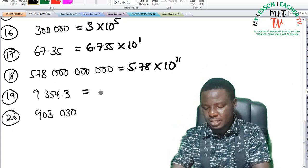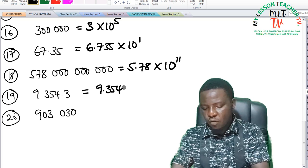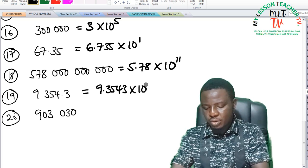And for number 19, this is said to be 9.3543 times 10 raised to the power of 3.